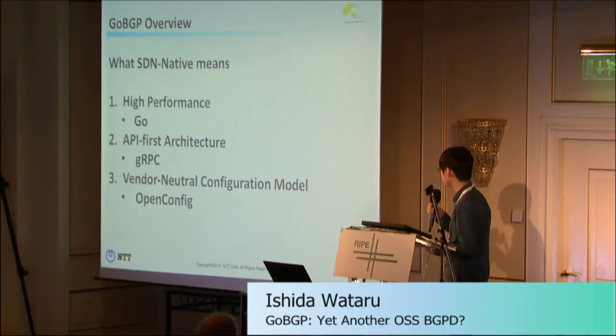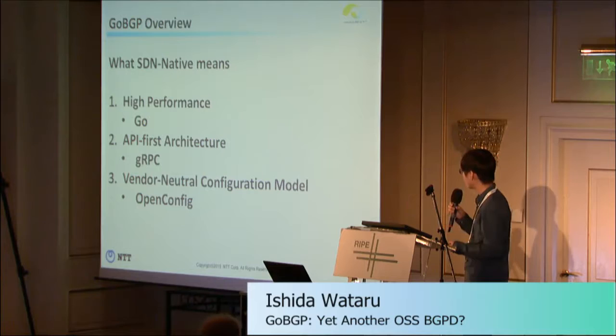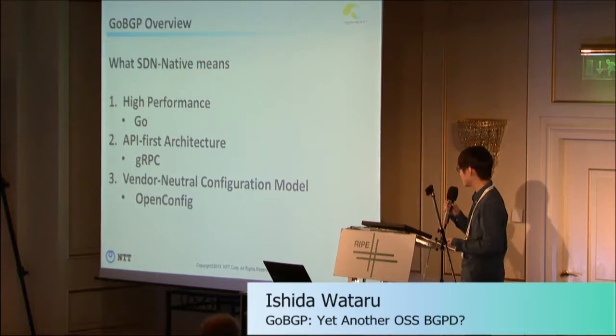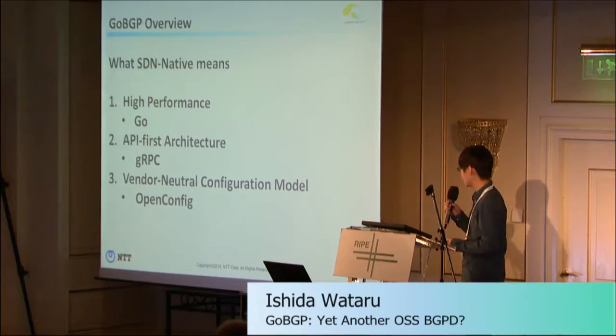For a quick review, what SDN-native means for us: first, high-performance — we use Golang and exploit multiple CPU cores; second, API-first architecture — we use gRPC for this; and last, vendor-neutral configuration model — we use OpenConfig for this.